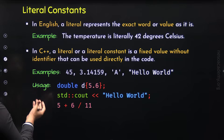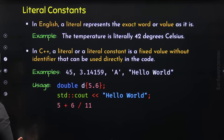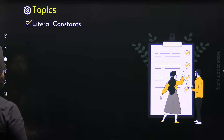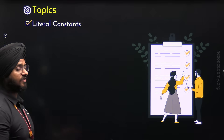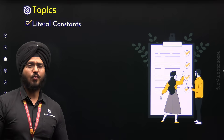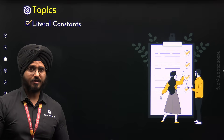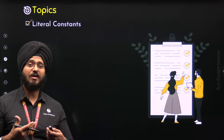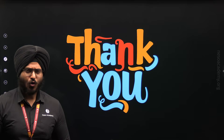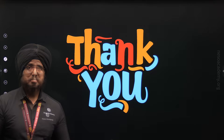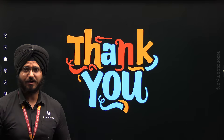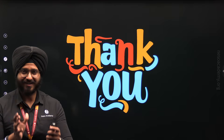With this, I hope it is clear what is the meaning of a literal constant. We are done with this topic — literal constants. We have understood what are literal constants and how we can use literal constants in C++ code. Thank you for watching this presentation. I will see you in the next lecture where we will discuss different types of literals.